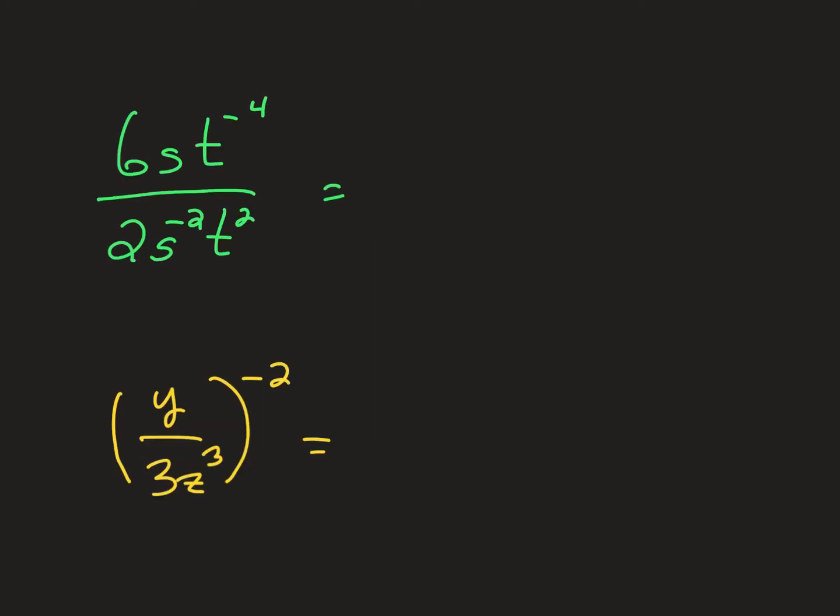One more slide here. I want to show you an example. Alright, this first one says 6st to the negative four. What I'm going to do first here, I'm just going to flip things that need to flip. So I'm going to bring this s to the negative two to the top.